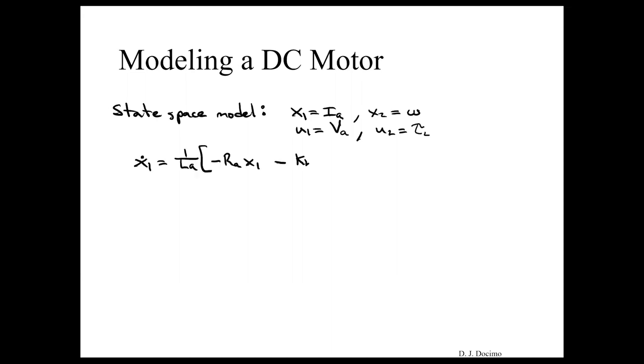And we can get our state space model just by replacing those variables and putting in those KB and KV and KT terms into these equations. So we end up with our first state equation, which represents our current dynamics, and our second state equation, which represents our angular velocity dynamics. And you can see here that each of them affect the other. So our velocity dynamics is impacted by our current dynamics and vice versa.